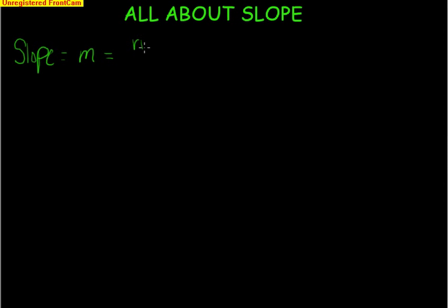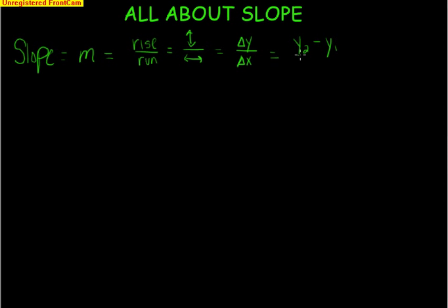Our basic definition of slope is that it is rise over run — meaning how much do you go up and down, what's your vertical shift, divided by how much do you go left or right, what's your horizontal shift. We can use symbols, and we're going to use these a lot in calculus: delta meaning change. So it's the change in y over the change in x. And then finally, our most basic formula: y₂ minus y₁ over x₂ minus x₁. It doesn't matter which point you start with, as long as you're consistent. Always put the x's on the bottom — rise before you run.